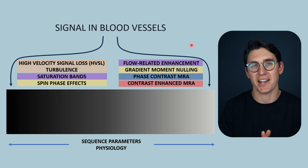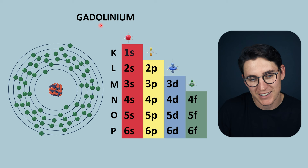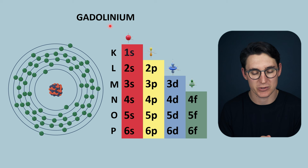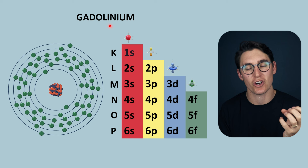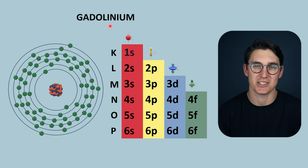If you've worked in MRI at all, you'll notice that all of the contrast agents are generally gadolinium-based. Gadolinium has a unique property where it drastically shortens T1 times of tissues. Gadolinium generally stays in the extracellular space within blood vessels. It rarely crosses membranes. It's a large molecule, and it in itself is toxic. It needs to be bound to something known as a ligand in order to be safely administered to our patients.